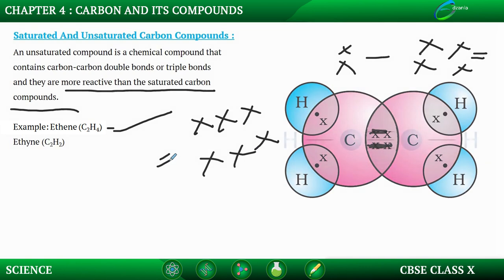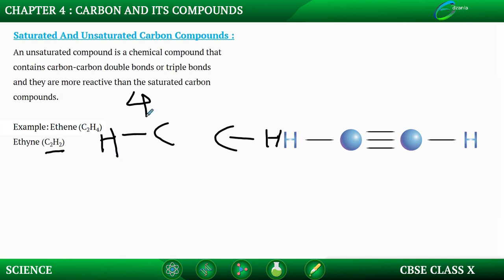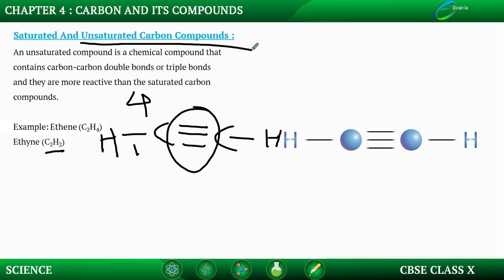Ethene is an example of a double bond compound. Then there is another example called ethyne. Ethyne has two carbons, and it has just two hydrogen atoms — hydrogen can only form single bonds because hydrogen has just one atom. We know that carbon needs four bonds to satisfy its valence shell, so counting one, two, three, and four — that is why it forms a triple bond, and hence it is an unsaturated carbon compound.